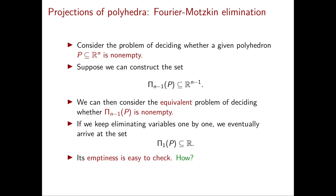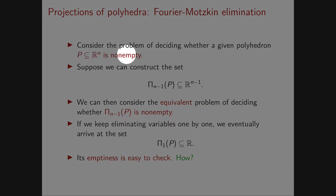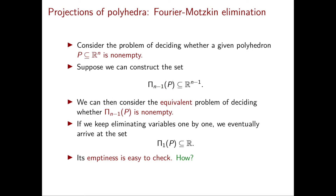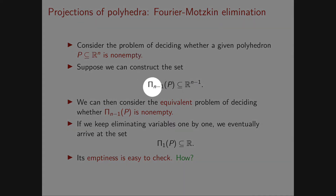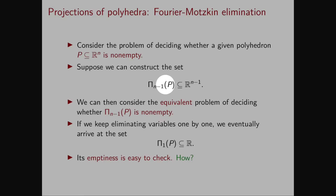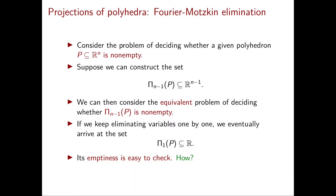Projections of polyhedra are extremely useful for a number of different reasons. For example, here we consider the problem of deciding whether a given polyhedron P is non-empty. This is not a trivial task in general, and in fact you can show that this problem is computationally as hard as linear programming. But how can we use projections to solve this problem? Well, suppose that we can construct the projection of P into the first n minus one components, which is capital pi_{n-1} of P. We just said that P is non-empty if and only if this projection is non-empty. Therefore, we can just forget about the original P and instead solve this problem over this n minus one dimensional projection.